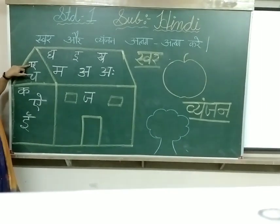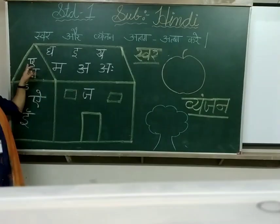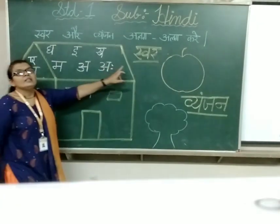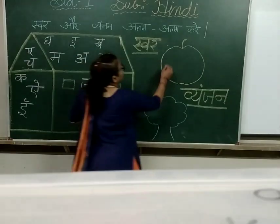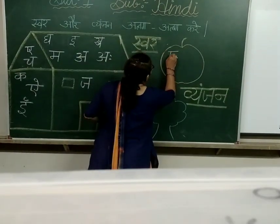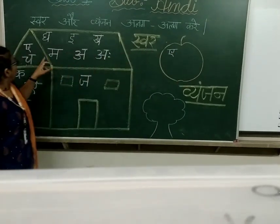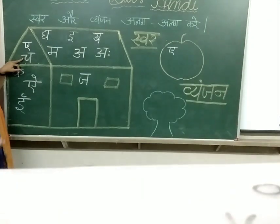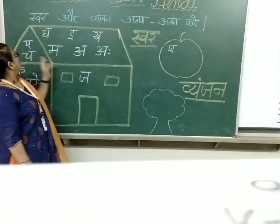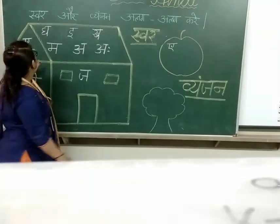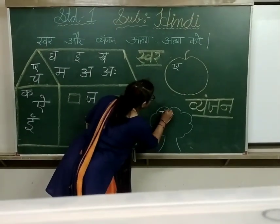Look here. अ से अड — अ से अड क्या होता है? Swar or Vyanjan? अ से अड Swar hota hai. So we have to write अ से अड in save. It means apple. Now च से चमच — च से चमच क्या होता है? It's Vyanjan. So we have to write च से चमच in tree.